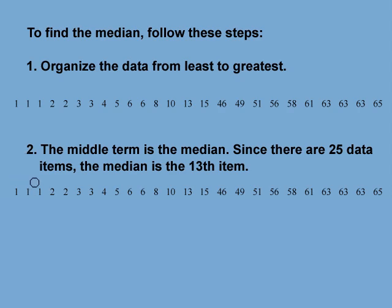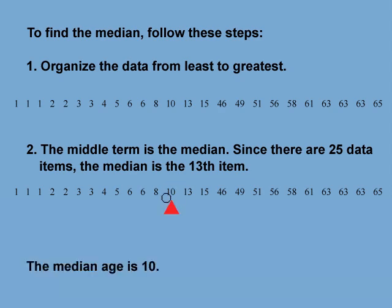Counting to the 13th term: 1, 2, 3, 4, 5, 6, 7, 8, 9, 10, 11, 12, 13. The median age is 10.